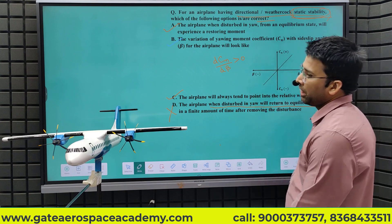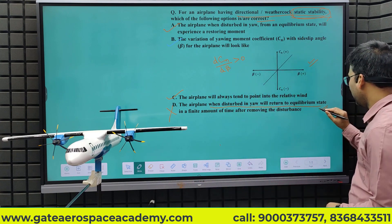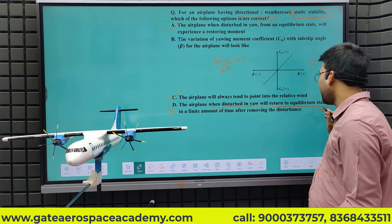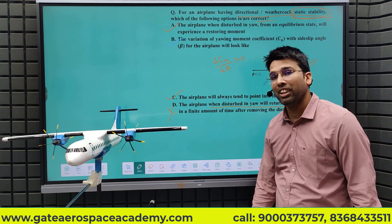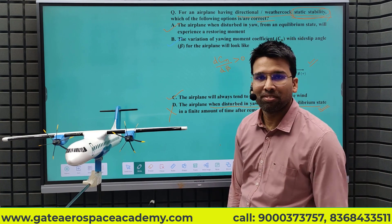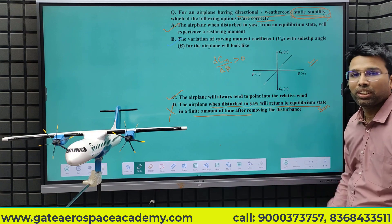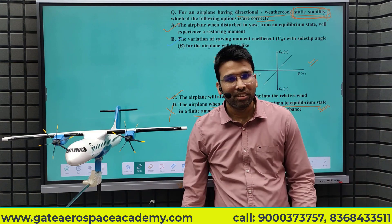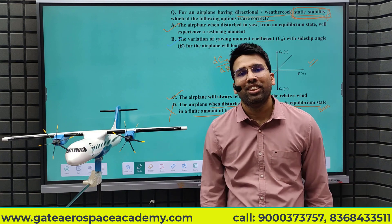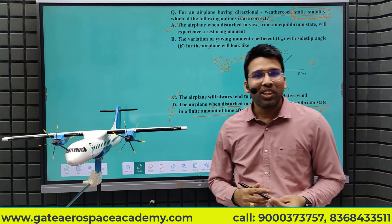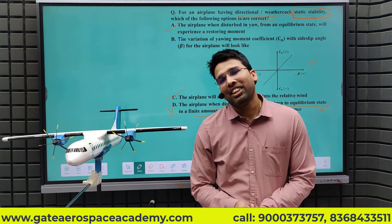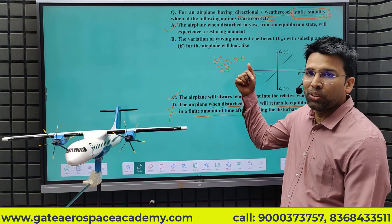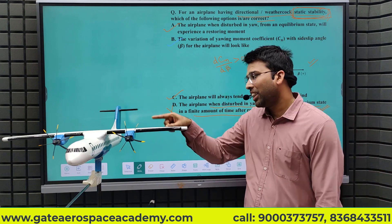If you look at the definition of static stability, you will understand that option D may be true or may not be true — it depends upon dynamic stability. What is dynamic stability? It is the time response of a statically stable system. They have given only static stability in this problem and have not talked about dynamic stability. That's the reason option D is not true. This is why I explained all the definitions thoroughly in the stability lectures.